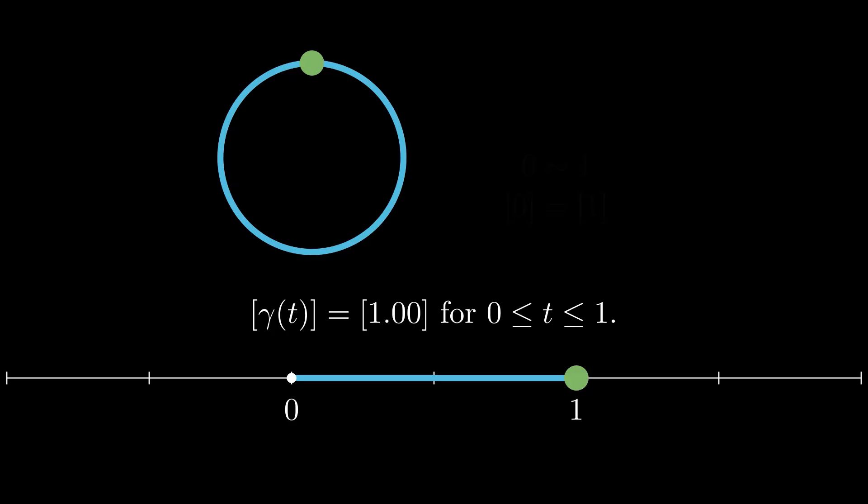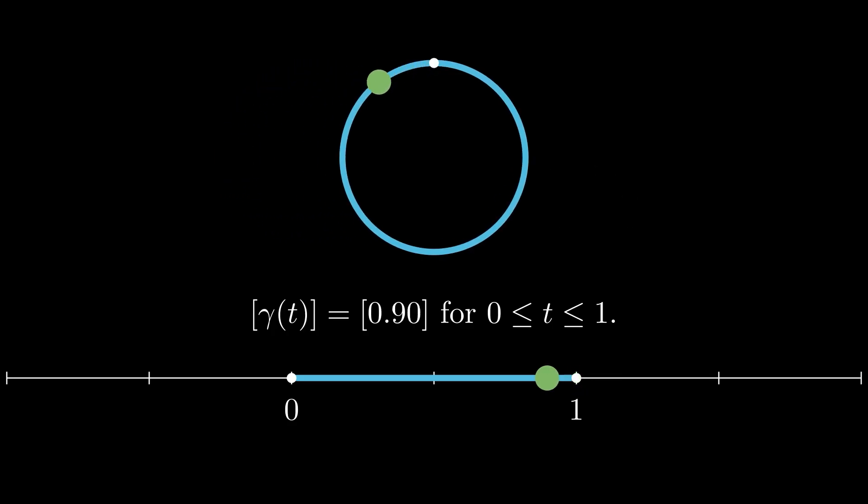In other words, the path that went from 0 to 1 when projected by this equivalence relationship becomes a circular loop from 0 to 0.